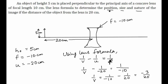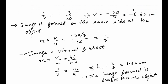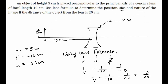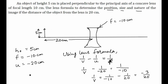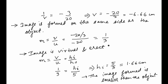To summarize: the position of the image is at minus 6.66 centimeters, on the same side as the object. The size of the image is 1.66 centimeters. The nature of the image is virtual, erect, and smaller than the object.